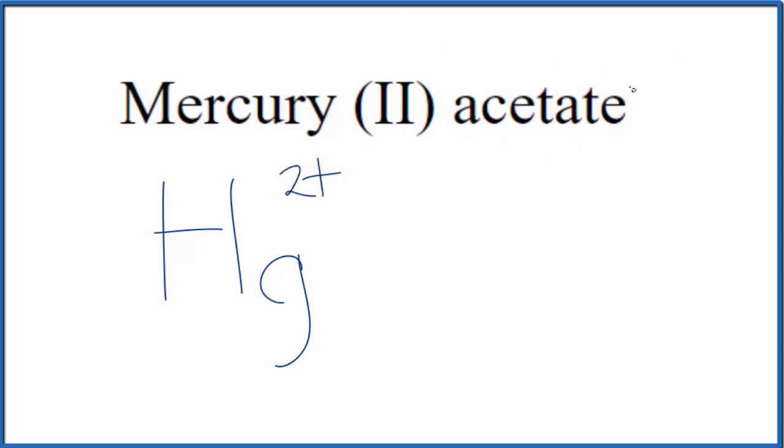For the acetate here, it ends in -ate. That means you're not going to find this on the periodic table. This is a polyatomic ion. Since we have this polyatomic ion here, you either memorize the formula for the acetate ion or if you're allowed, you look it up on a list of polyatomic ions. The acetate ion is CH₃COO⁻.